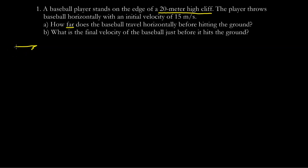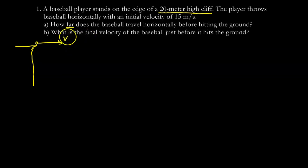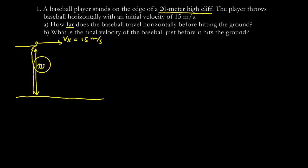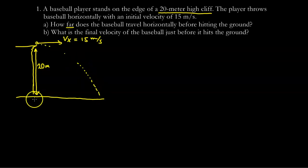The first step is to draw a sketch. I've got a ball being thrown to the right with a velocity of 15 meters per second, so VX equals 15 meters per second. The cliff is 20 meters tall, and I'm looking for the horizontal displacement, delta X, which is the distance the ball travels before hitting the ground.